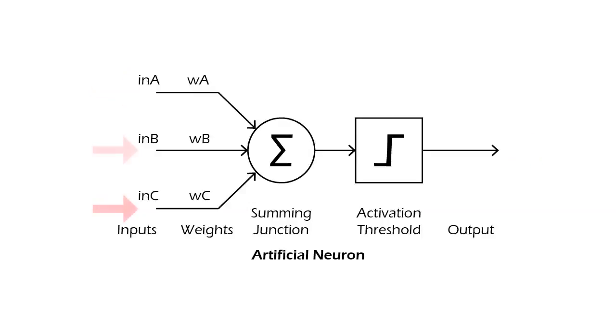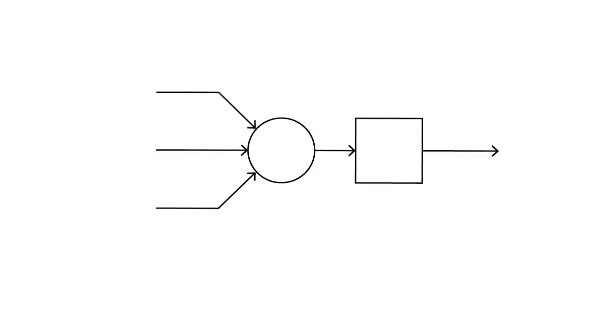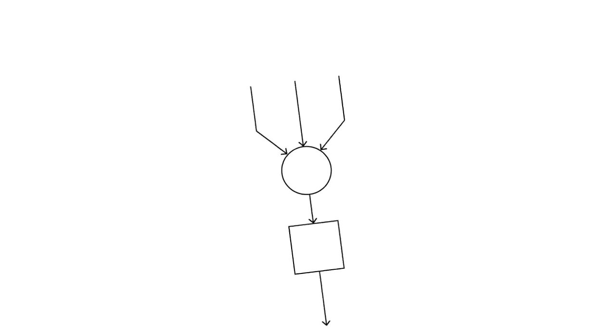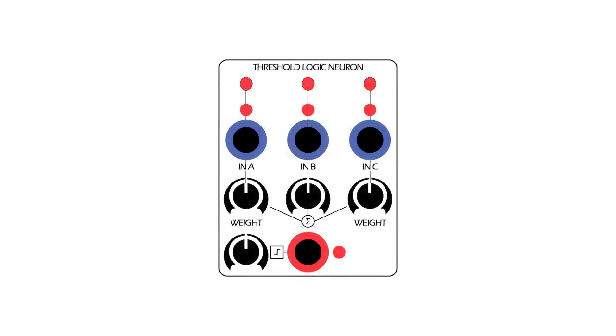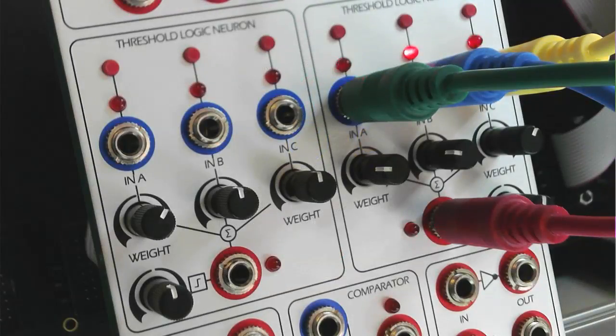For the purposes of modular synthesizers, the Threshold Logic Neuron represents a flexible patch programmable logic gate. Interactions between the two Threshold Logic Neurons and the various other submodules of the ANN can create and process complex pulse patterns.